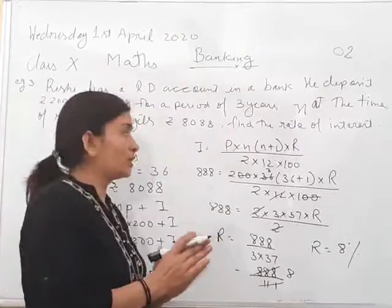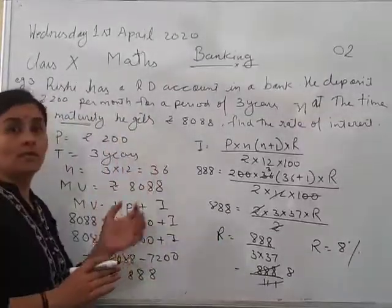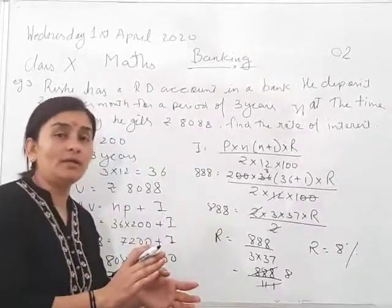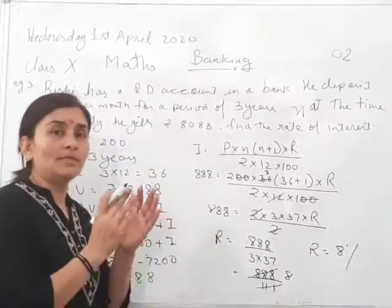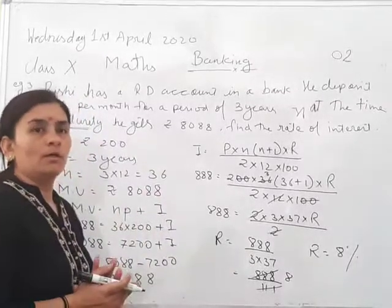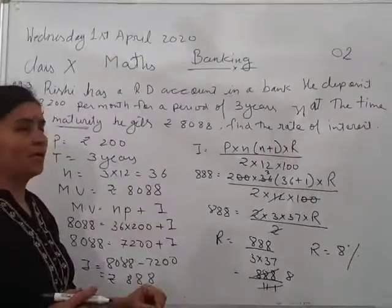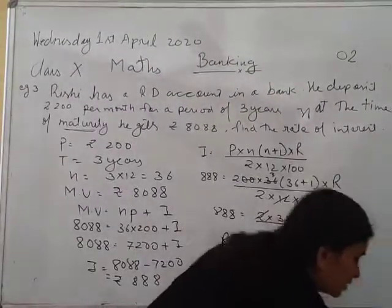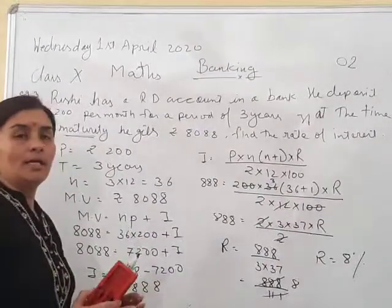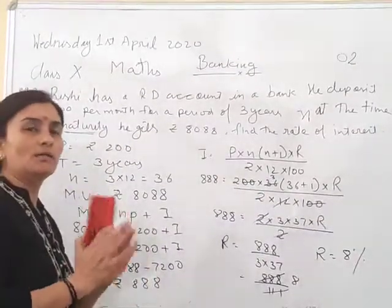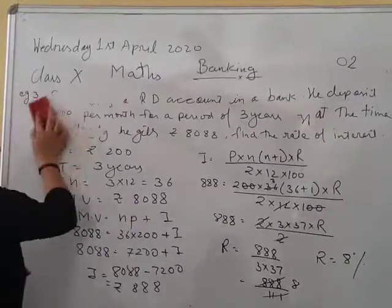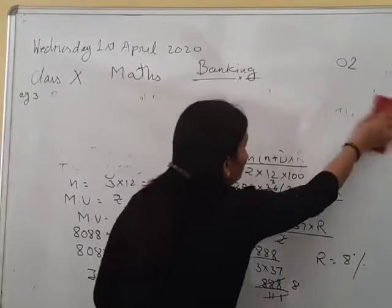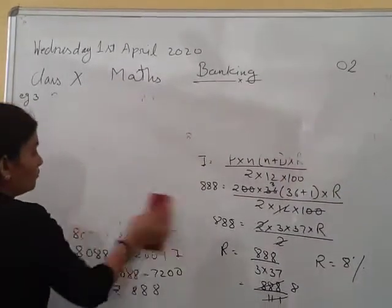Now suppose if the question is twisted. If they will write the interest, it means the interest is given to you, and then again the same way we have to apply the formula and then cross multiply we will get the rate.